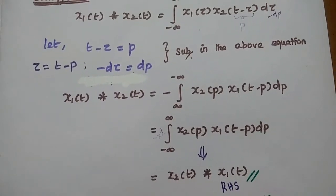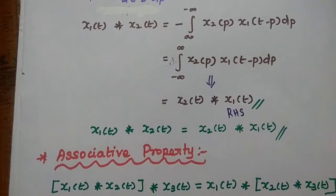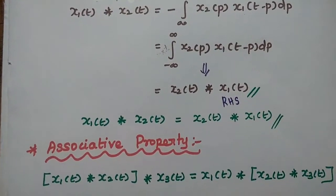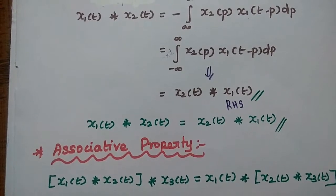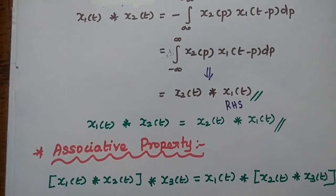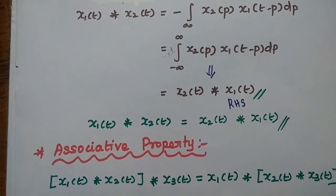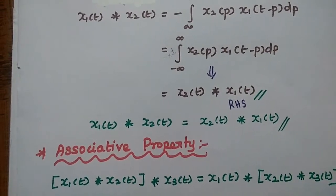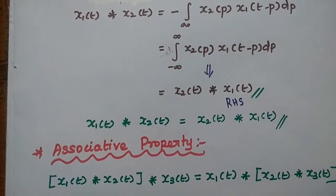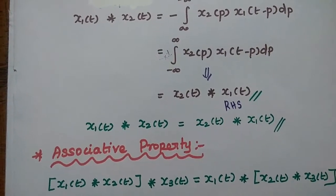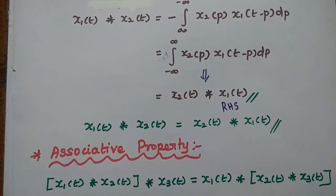In the same way, we can prove the associative property. In the associative property, on the left hand side we convolve the first two signals: X1 of t convolved with X2 of t, and the result is again convolved with X3 of t. That is equal to X1 of t convolved with the result of X2 of t convolved with X3 of t.